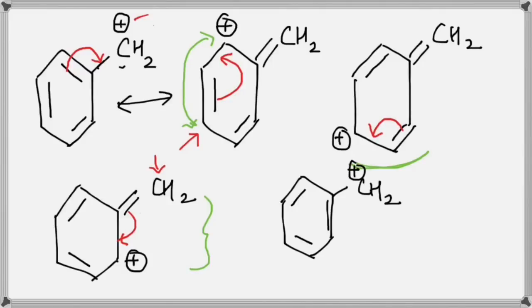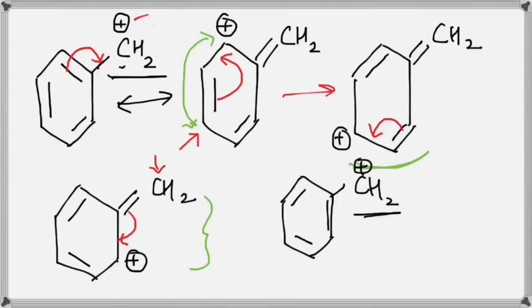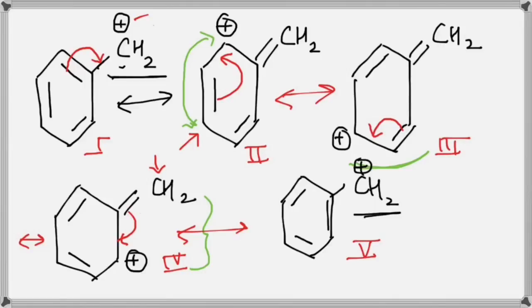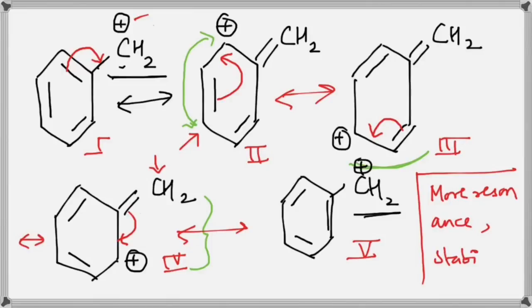We know we have drawn all the resonance structures because the plus charge has returned to the same group where we started. We can draw double arrows to indicate that all of these are resonance structures. In total, we have one, two, three, four, and five resonance structures for this species. Here is one more rule: more resonance means more stability — the more resonating structures you have, the more stable the species will be, so this species is going to be very stable.